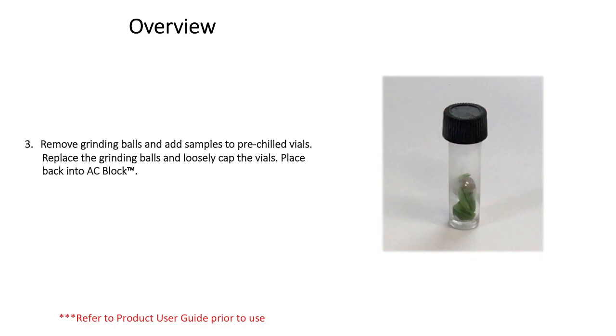Remove vials from the AC block, pull the ball into the caps, and unscrew. Add sample and then replace the stainless steel grind ball. Screw on the line caps and place back into the AC block. Repeat until all vials are loaded with sample. Minimize the time vials are out of the AC block.